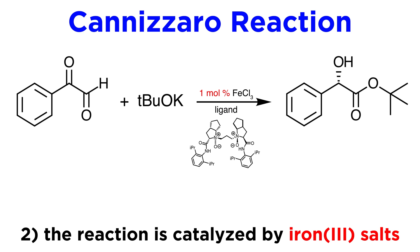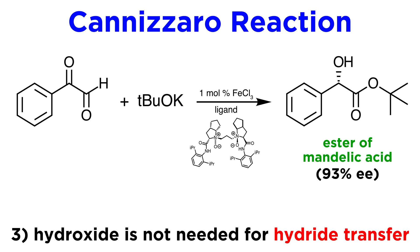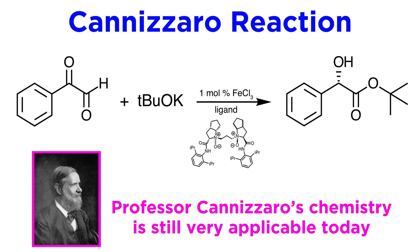Note that only one mole percent of the catalyst is used. Third, the hydroxide ion is not needed to trigger the hydrogen transfer — any strong nucleophilic base will do. In this case, potassium tert-butoxide is used, which is even slightly more basic than hydroxide. Attack of this base onto the aldehyde will ultimately lead to an ester of mandelic acid. Obviously all sorts of new substituted mandelic acids can be made by this methodology as well.